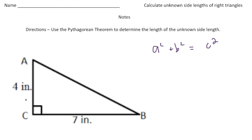And this time we know the length of side a and b. So we're trying to figure out the length of side c. So it's going to be 4 squared plus 7 squared equals c squared. So this is going to be 16 plus 49 equals c squared. 49 plus 16 gives us 65 which equals c squared. And now to get c by itself I'm going to square root both sides.